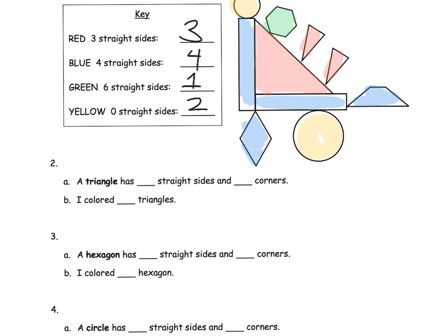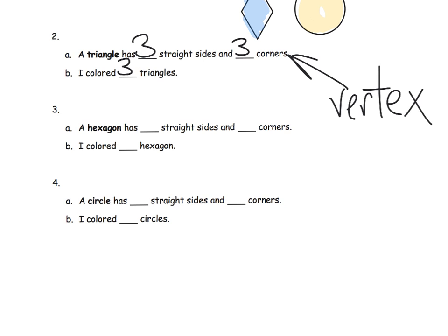So, a triangle has, let's see, it has three straight sides and three corners. Remember, we could call that a vertex if we wanted to. And I colored how many triangles? Well, we colored three triangles, didn't we?